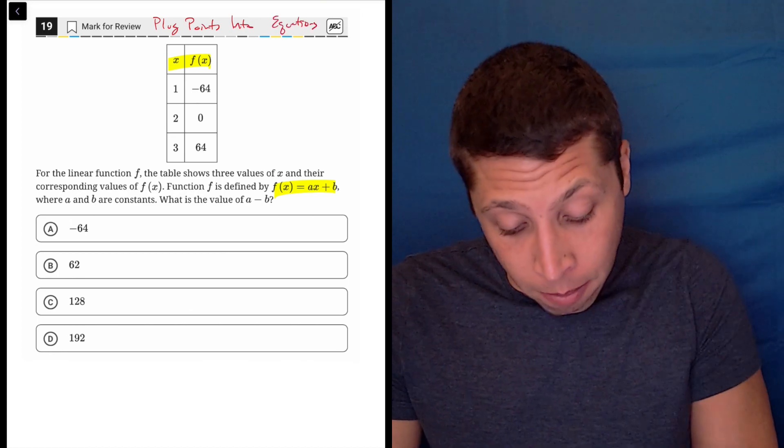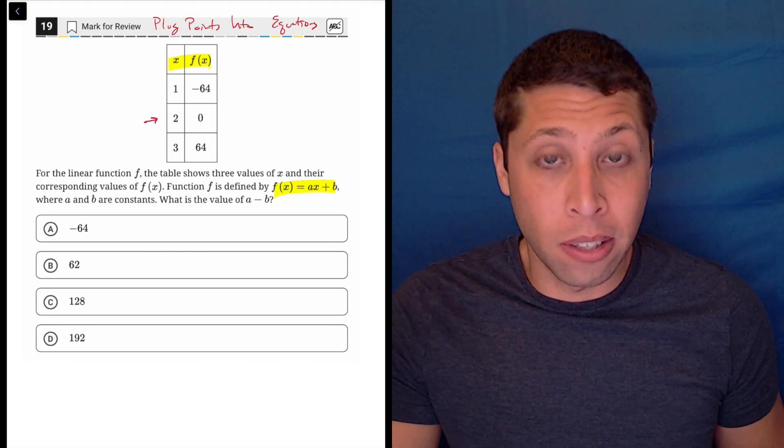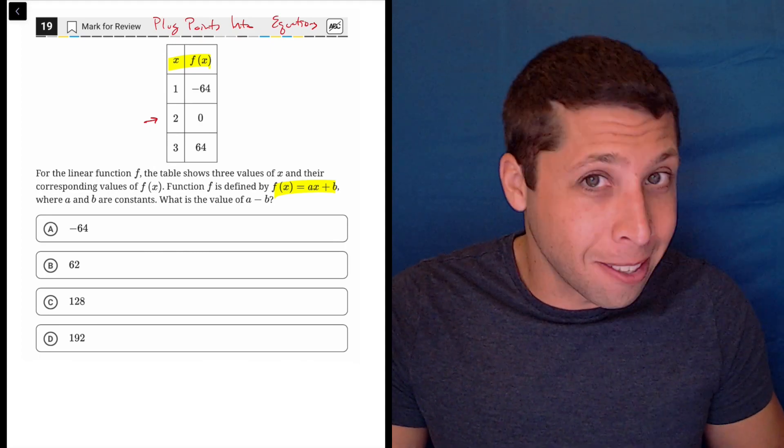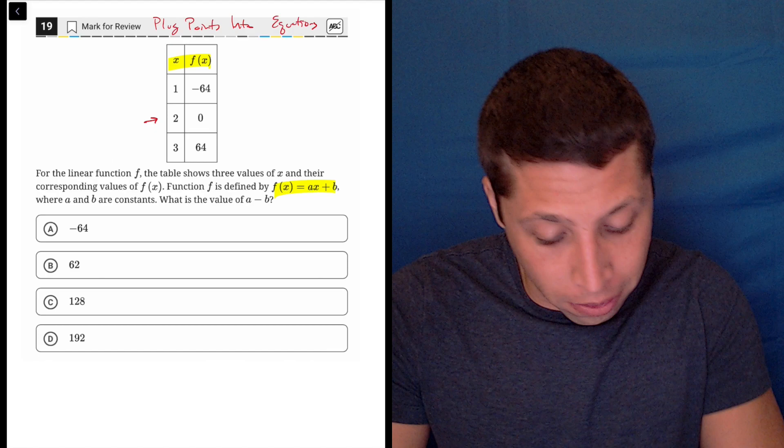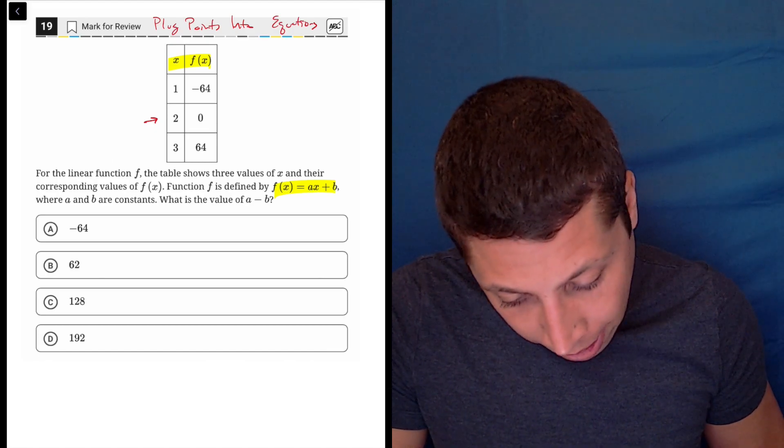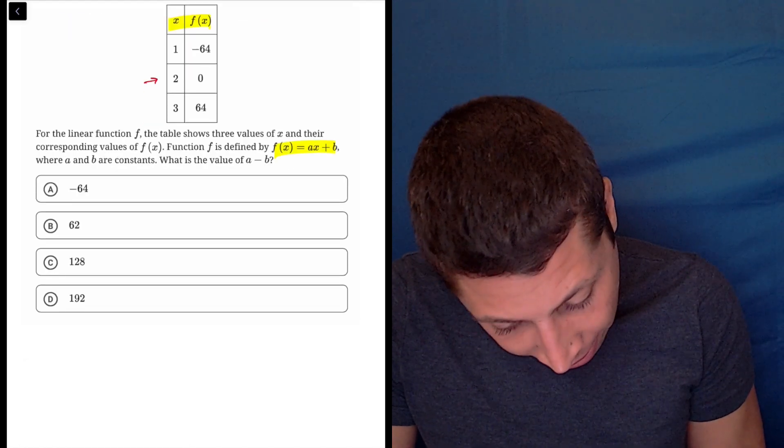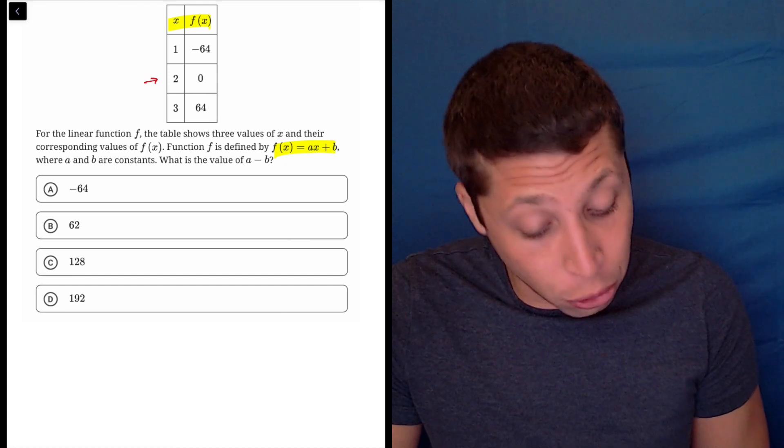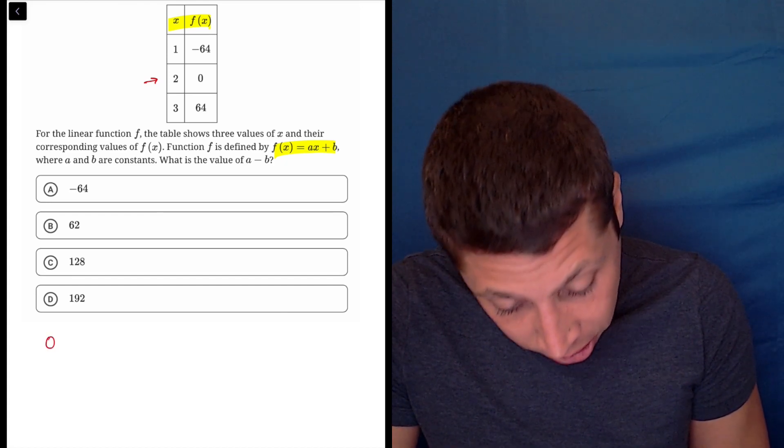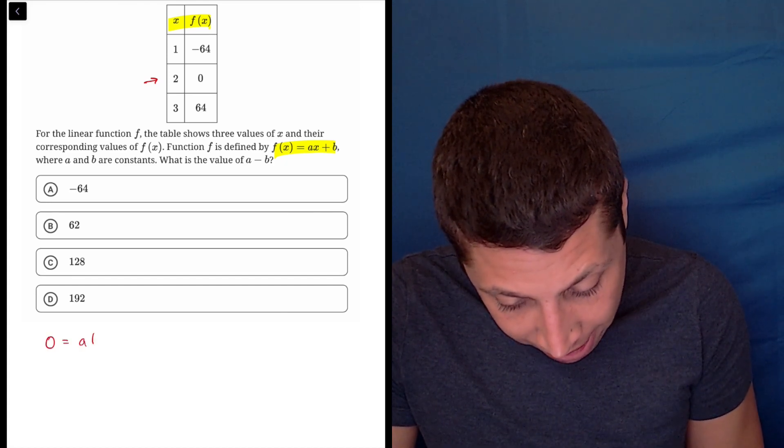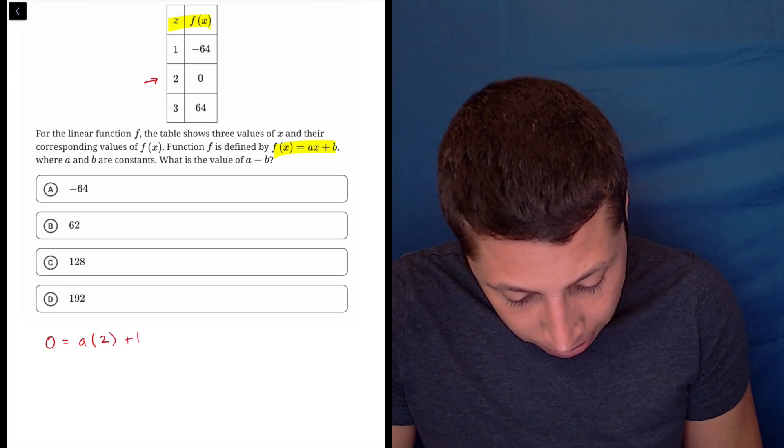One of our strategies is to plug points into equations. So why not? Most of us are going to start with the point that involves a zero because that tends to make things work out nicely. So let's just plug that in, and we would get that f of two, which is zero, so zero is equal to a times two plus b.